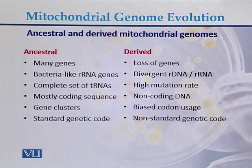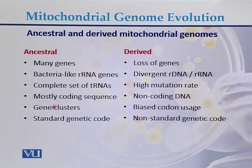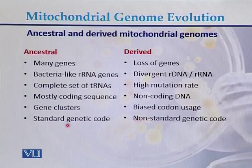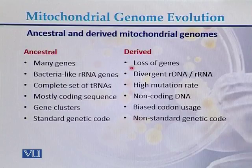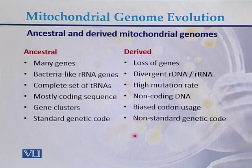Comparing the ancestral and derived mitochondrial genomes: the ancestral genome had many bacteria-like rRNA genes, a complete set of transfer RNAs, mostly coding sequences, gene clusters, and standard genetic code. In contrast, derived mitochondrial genomes show loss of genes, divergent rRNA and DNA, high mutation rate, non-coding DNA, biased codon usage, and non-standard genetic code.